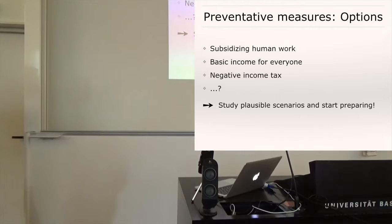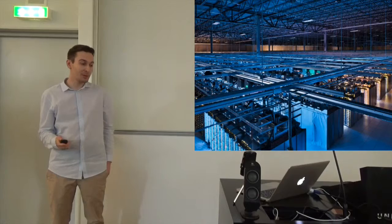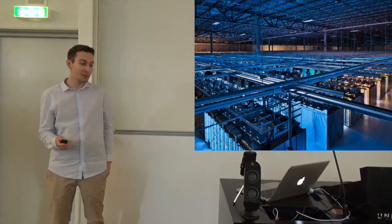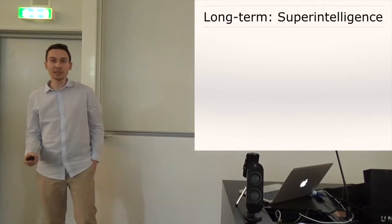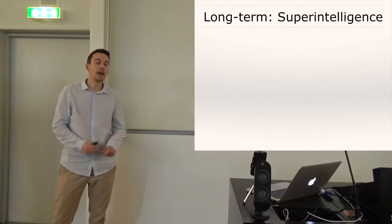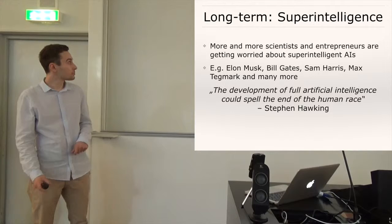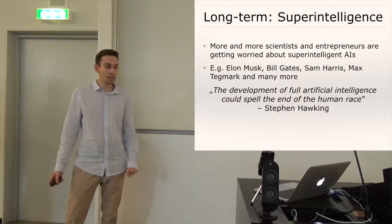Okay, thanks. Now we come to the long-term future, the most speculative stuff, namely the prospect of superintelligence. And actually in the last two years especially, more and more entrepreneurs and scientists have become worried about the prospects of superintelligent artificial intelligence. And for example, the famous entrepreneurs Elon Musk and Bill Gates and also Sam Harris and physicists like Max Tegmark and many more that I don't have time to name.